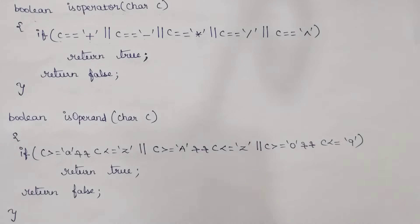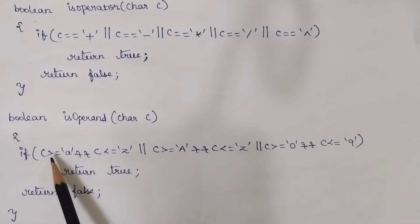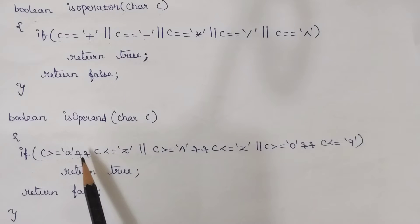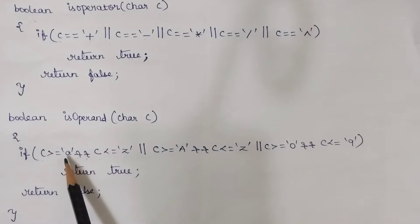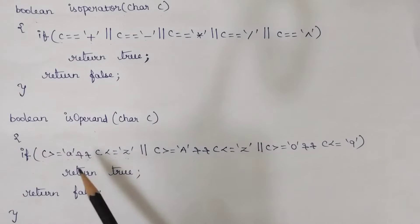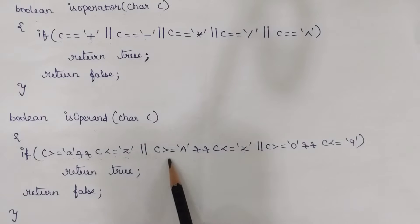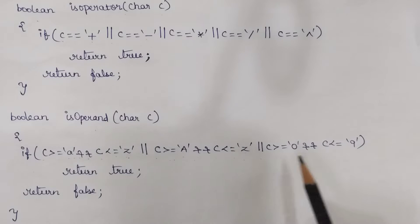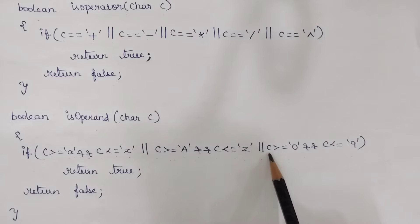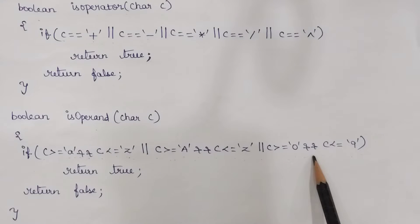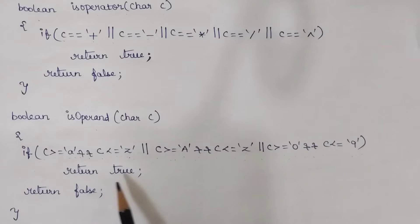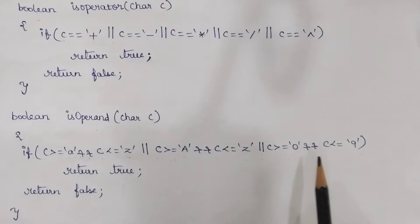The next function checks whether the character is an operand. An operand can be any numerical value between 0 to 9, or a variable from lowercase a to z, or uppercase A to Z. We use an if condition to check if the scanned character falls in these ranges. If any of these cases is true, it returns true, meaning it is an operand; otherwise it returns false.